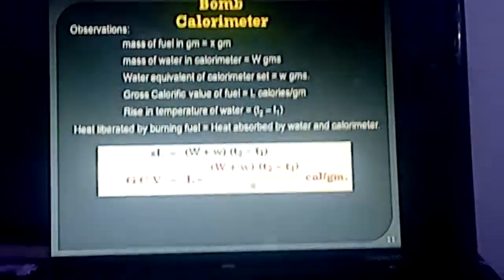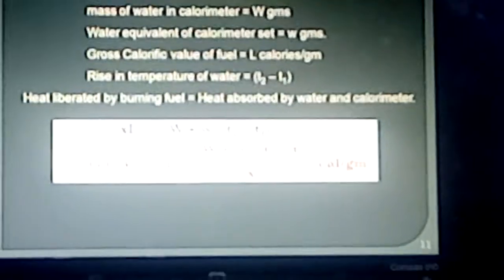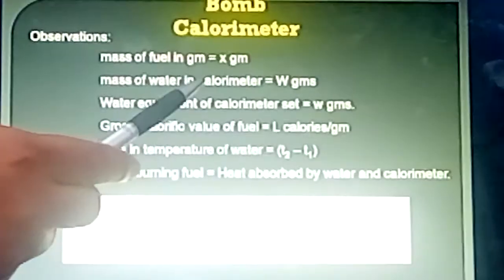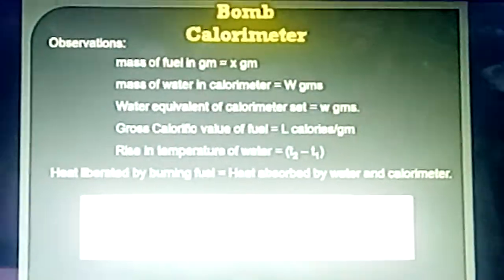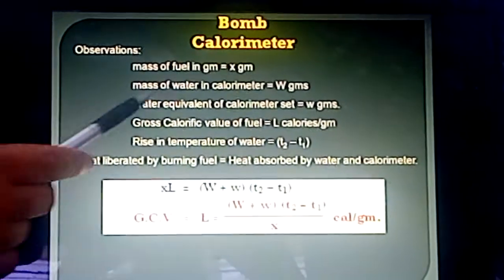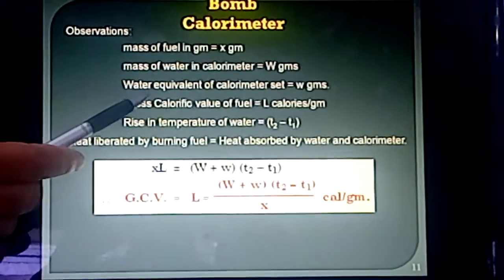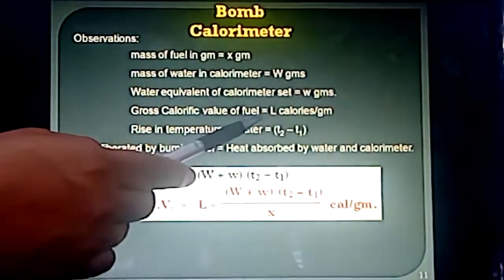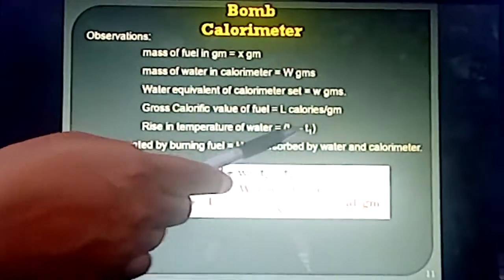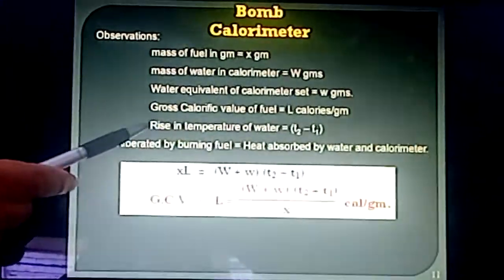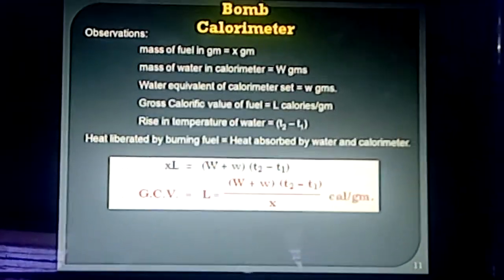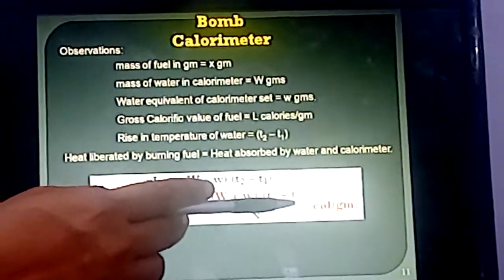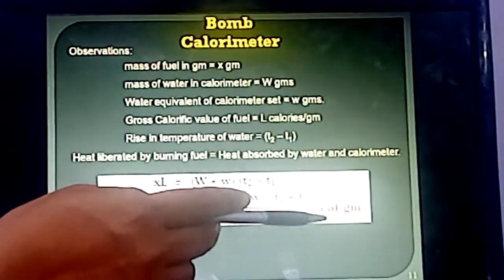The observations recorded in the bomb calorimeter experiment are: number one, mass of the fuel in grams, represented as x grams; number two, mass of water in the calorimeter, represented by capital W; number three, water equivalent of the calorimeter, represented by small w. Also, L stands for gross calorific value, t1 is the initial temperature, t2 is the final temperature, and t2 minus t1 is the rise in temperature. The formula to calculate GCV is: GCV = (W + w) × (t2 − t1) / x, and the unit is calories per gram.